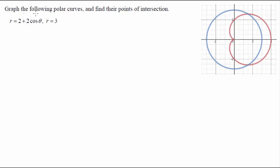So it says graph the following polar curves. It is helpful to take a look at what their graphs look like. I put in r equals 2 plus 2 cosine theta and r equals 3 into separate r1 and r2. I did this with Desmos online, but you can do it with your calculator at home as well.